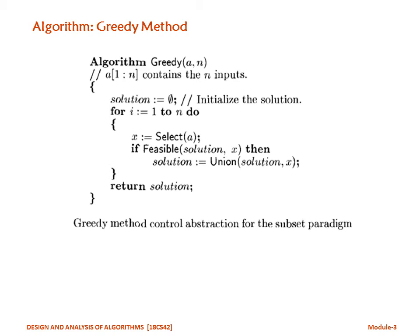In case if it is feasible, then it will be assigned to a solution variable again using union, and that will be returned as a solution. Likewise, we will iterate number of times, and we come across the number of possible solutions, which as of now we consider the best solution, and we return it back.